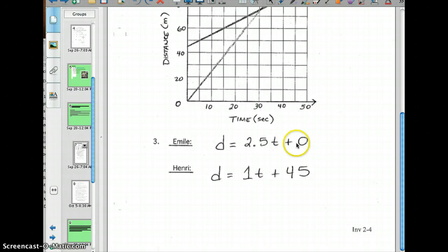Now, Emil's starting value is 0. So double-check your equations. Make sure you have them right. If you have any questions, make sure you ask, please.